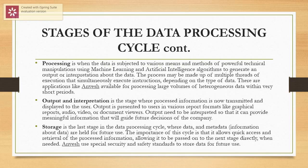Continuing with the stages of the data processing life cycle, the fourth one is processing. This is when the data is subjected to various means and methods of powerful technical manipulations using machine learning and artificial intelligence processes and algorithms to generate an output or interpretation about the data. The process may be made up of multiple threads of execution that simultaneously execute instructions depending on the type of data. There are applications available for processing large volumes of heterogeneous data within very short periods.